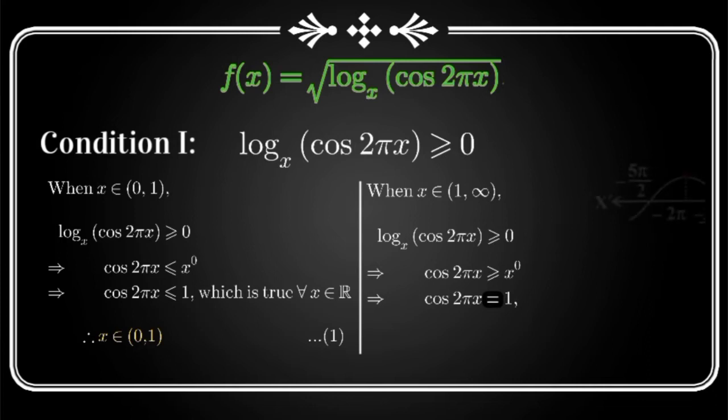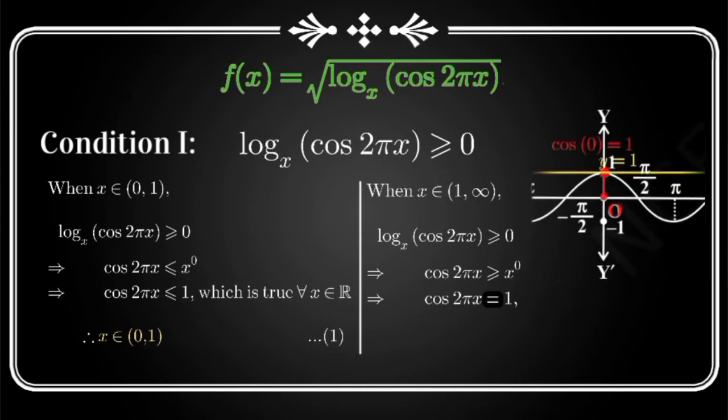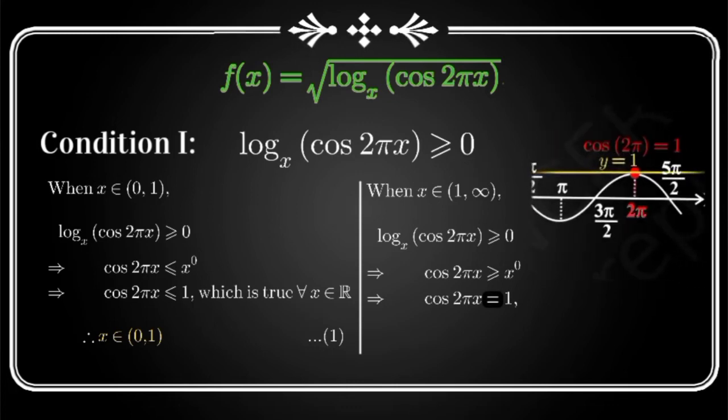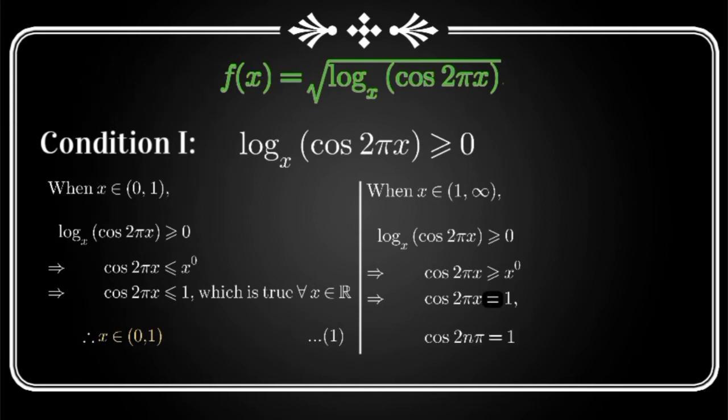So for this you can also refer the graph. So seeing the graph you will note that at every even multiple of π we get the cos function output as 1. So basically what it means is cos 2nπ is always equal to 1 where n belongs to an integer. So comparing cos 2nπ and cos 2πx we see that x shall be equal to n. That is x should be integer.